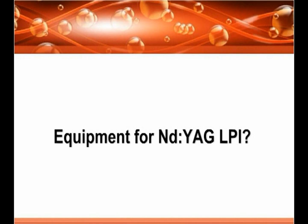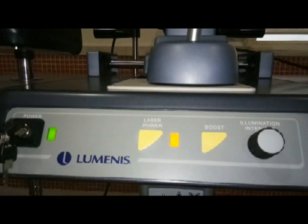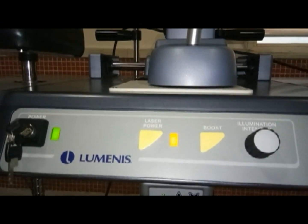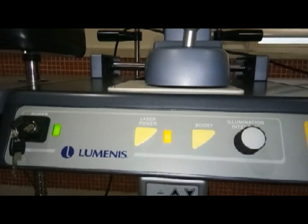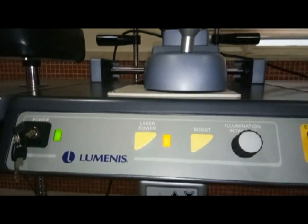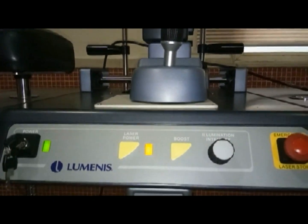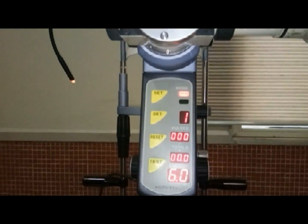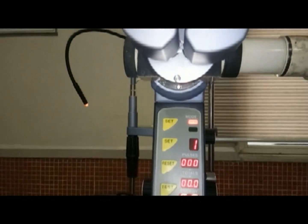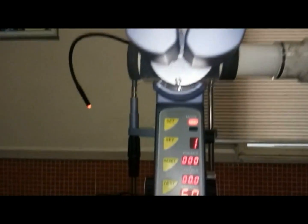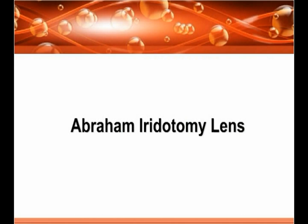The equipment for performing NDR Glazer Peripheral Iridotomy includes the NDR Glazer console where the parameters can be set. The Abraham Iridotomy lens is used to perform peripheral iridotomy, and use of this contact lens makes the procedure easier.